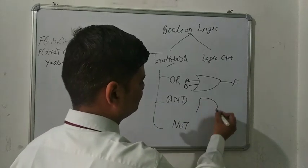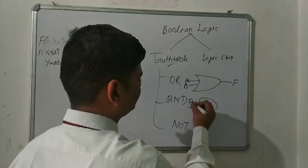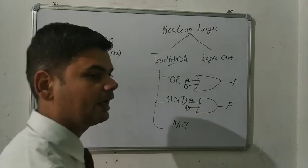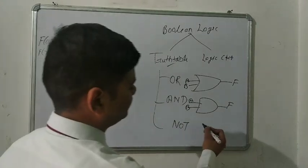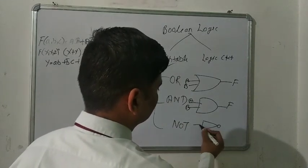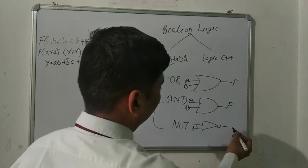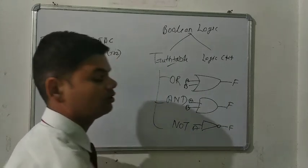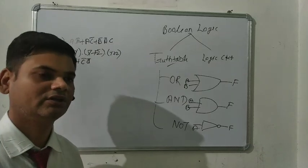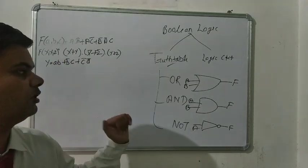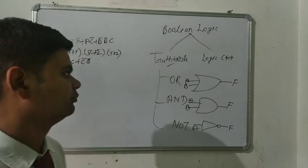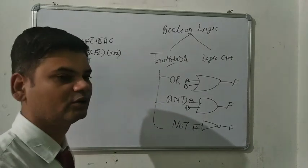Whenever you are taking two inputs A and B, that is the output of AND. The third one is the NOT gate. In the NOT gate we are taking only one input — not two, not three. But whenever you are using OR and AND, it depends on the expression — you can take two inputs or three inputs.